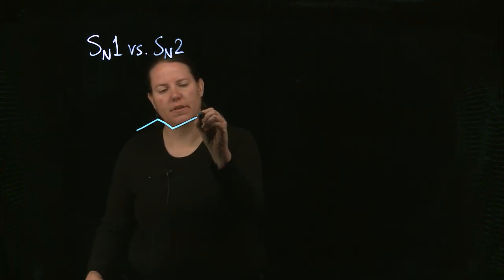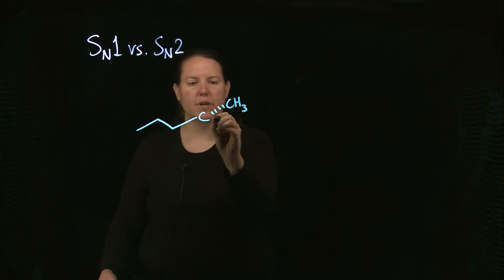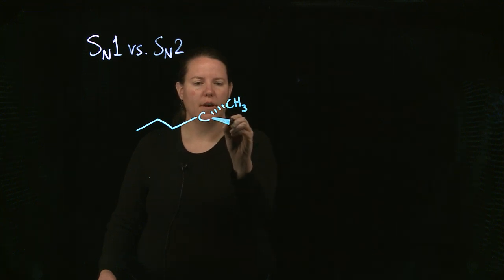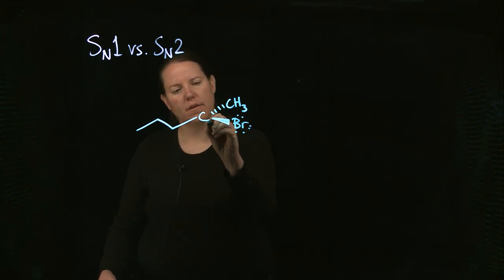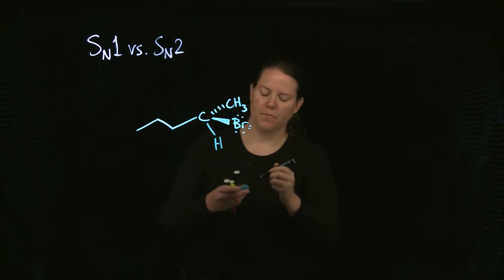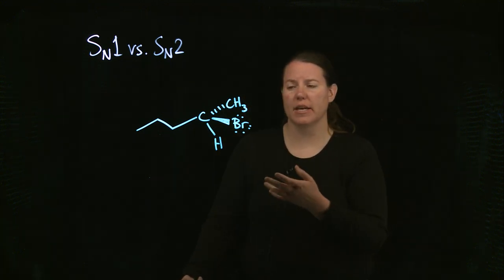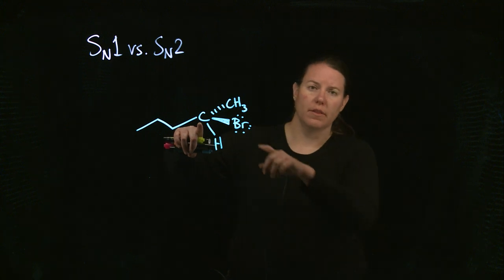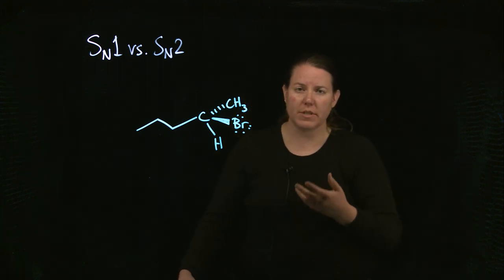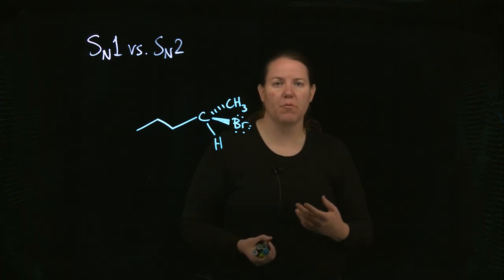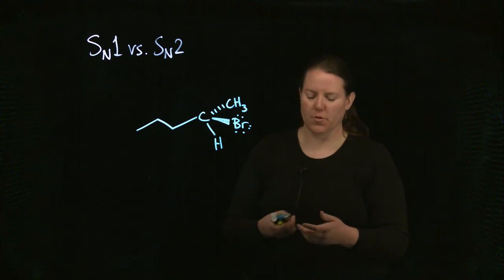So let's take an example where I have CH3 here, I have a BR here, and maybe I have an H there. So this is what we would call a secondary alkyl halide. Why is it a secondary alkyl halide? Because the carbon that is directly bonded to the halide is bonded to two other carbons. What's interesting here is that SN2 reactions can happen with primary or secondary alkyl halides, and I'm showing one that actually has a chirality center for a reason.